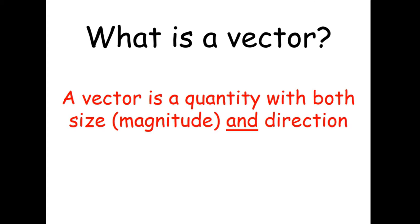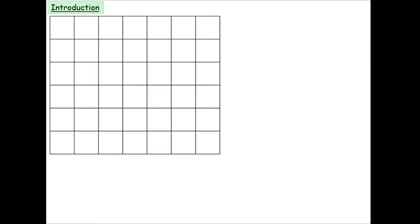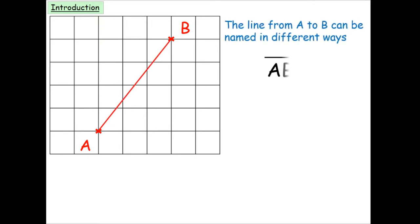Size is also sometimes referred to as the magnitude. Here we have two points, point A and point B, and we're going to look at the vector that joins the two points together. The first type of notation you'll see is written as capital letters between the two points, travelling from A to B, with an arrow telling you the direction it travels in.